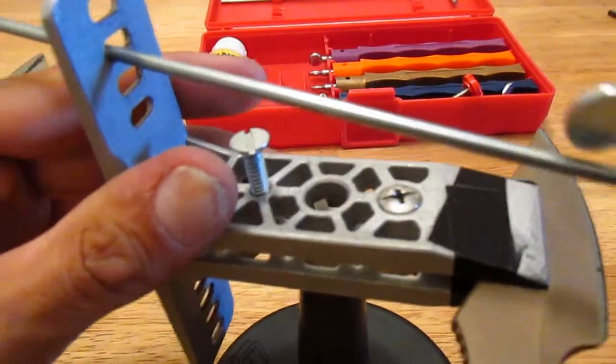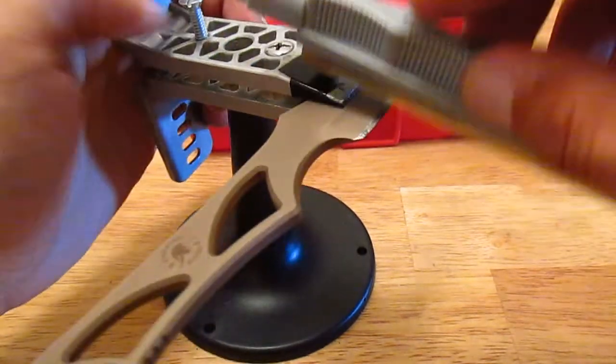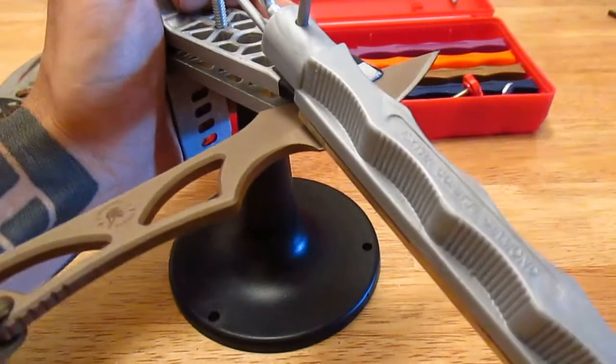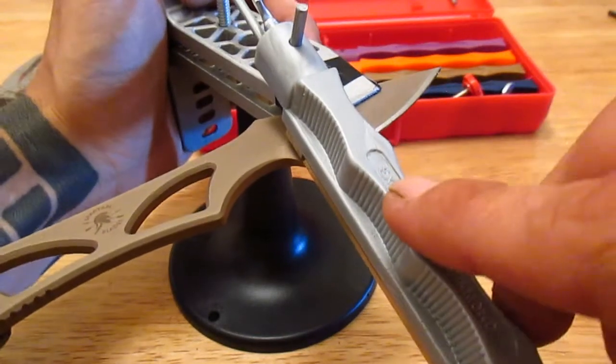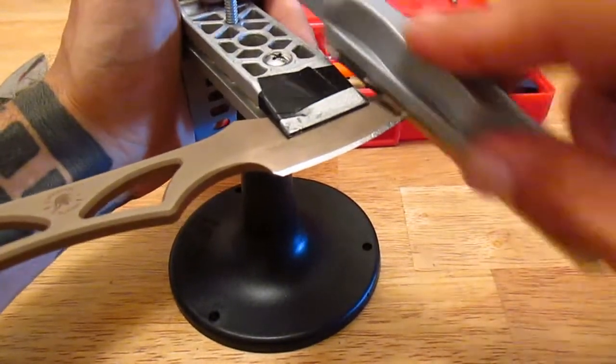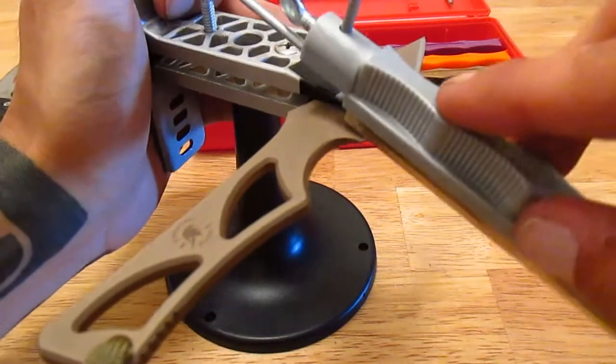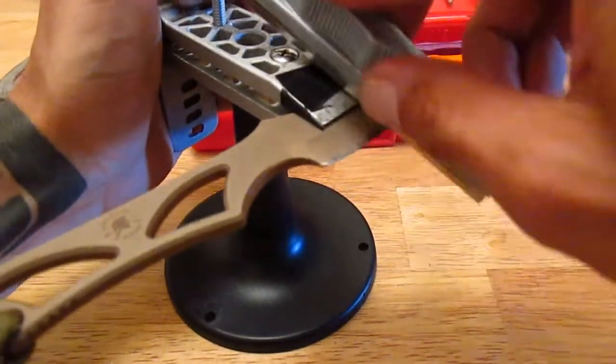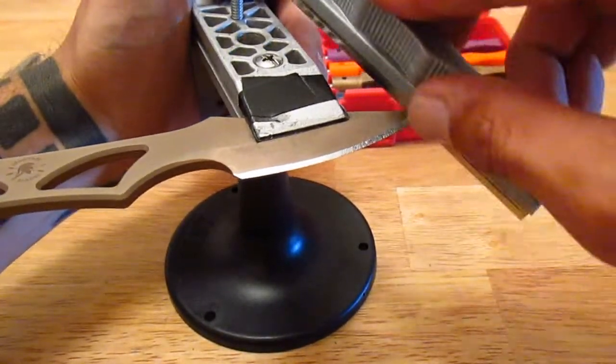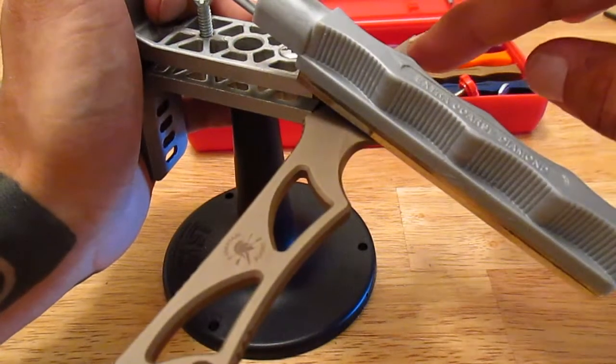So you slide your rod into that guide hole, put the hone on, and with very little pressure at all - I'll just show you what I do first. So it's basically that process repeated over and over and over again until you get the desired sharpness you want.